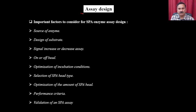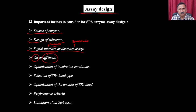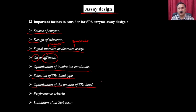There are important factors to consider when designing SPA-based radiometric assays: first, the source of the enzyme; second, the design of the substrate; third, whether to use signal increase or decrease format — that is, whether it is easier to measure product or substrate; fourth, whether to capture on-bead or off-bead signal; then optimization of incubation concentrations; selection of the type of SPA beads; optimization of the amount of SPA beads per reaction; and finally, performance criteria and validation of the SPA assays.